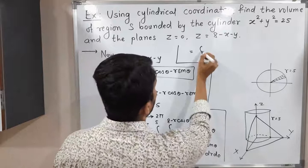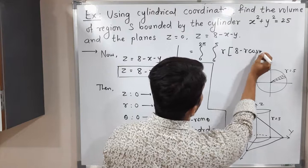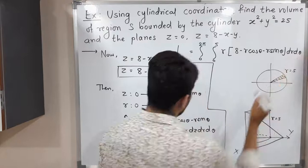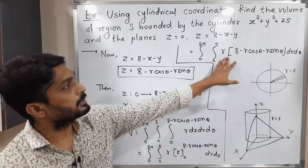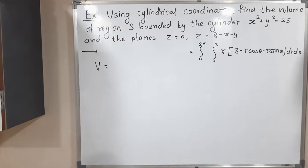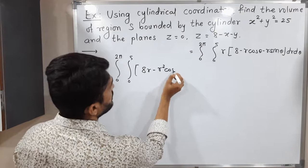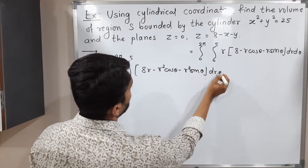After the z integration we have the double integral from 0 to 2π and 0 to 5 of r(8 − r cosθ − r sinθ) dr dθ. Multiplying r into the bracket gives: 8r − r² cosθ − r² sinθ. Integrating with respect to r: integral of r is r²/2, giving 4r²; integral of r² is r³/3. So we get 4r² − (r³/3) cosθ − (r³/3) sinθ evaluated from 0 to 5.